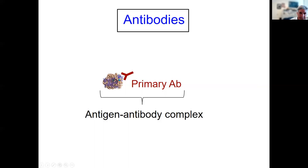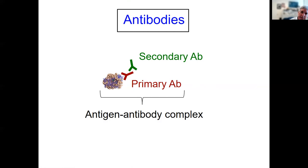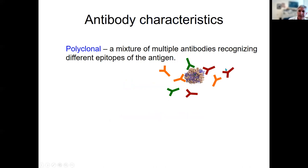There are various strategies for detecting whether this antigen-antibody binding has happened and where it is. The antibody that directly binds the antigen is known as the primary antibody. Often these are detected using another antibody — the secondary antibody — which has been raised to be specific for the primary antibody itself. The secondary antibody binds to the Fc region, the handle, which is not involved in antigen binding.